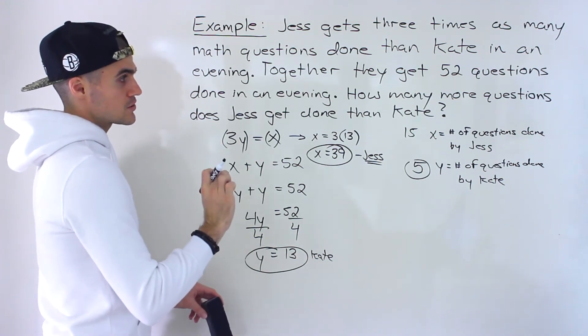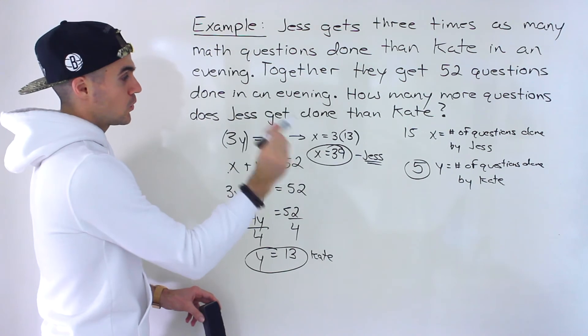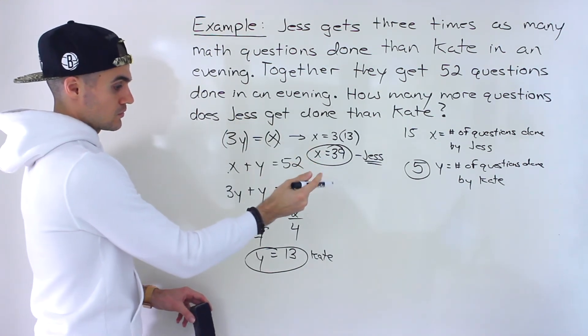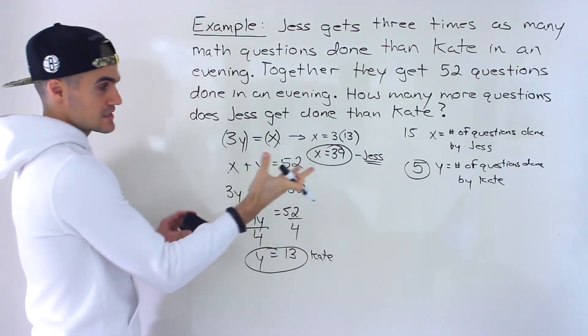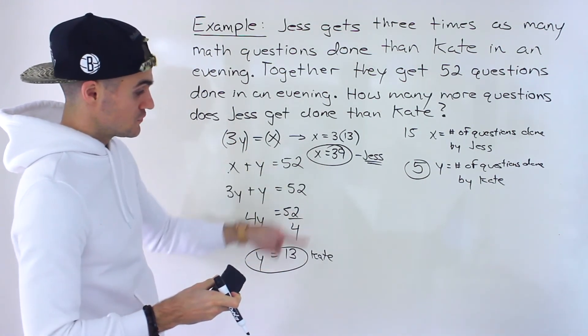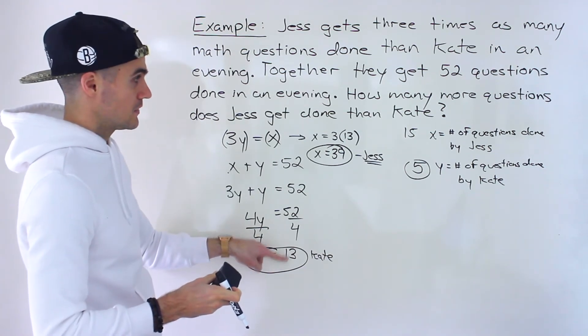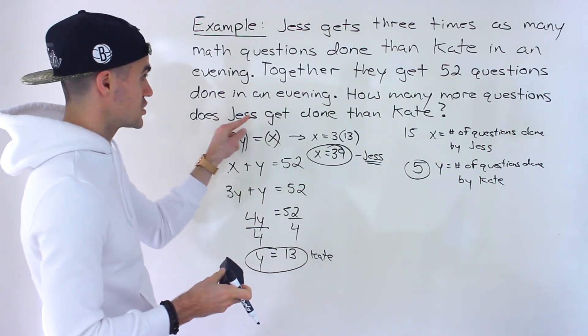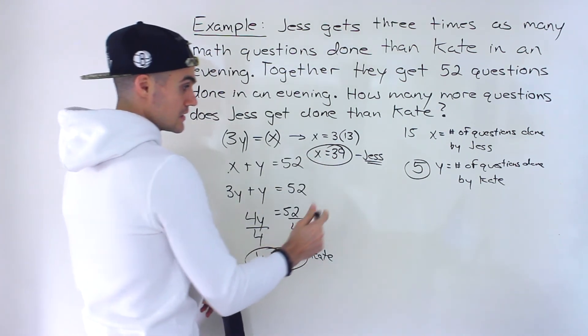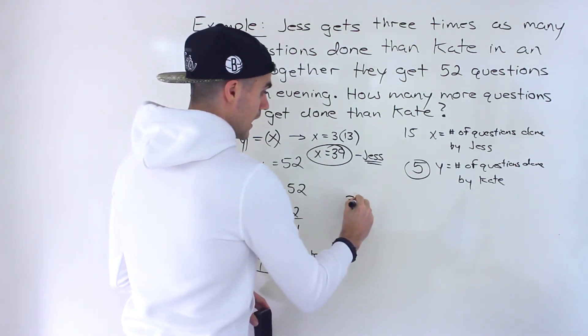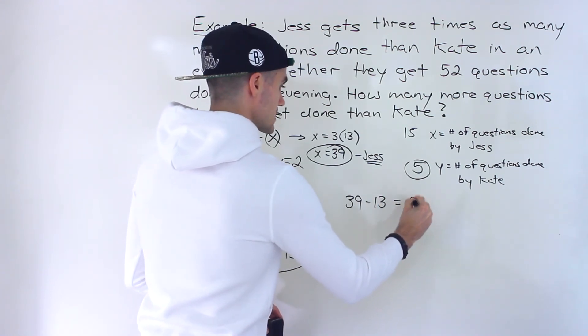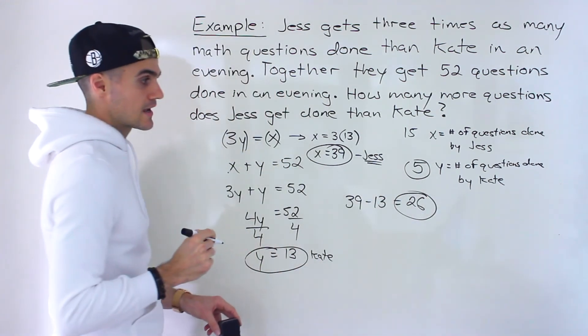Now, you got to be careful with these questions. They're asking how many more questions does Jess get done than Kate? So a lot of times these questions will ask, how many questions does each of them get done? That would be the answer. But they're asking how many more questions does Jess get done than Kate? Meaning, what's the difference between these? So we would do 39 minus 13, which would be 26. So that's the answer right there.